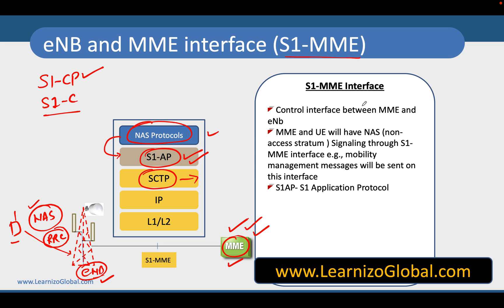This is a control interface between MME and eNodeB. MME and UE will also have NAS signaling via the S1 MME interface — that includes mobility management messages — and the protocol used here is S1AP. MME takes care of all control plane functionality and is the entry point for the control plane in the core network.